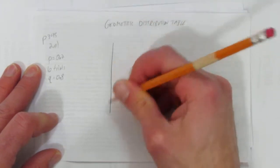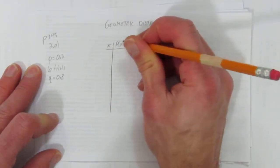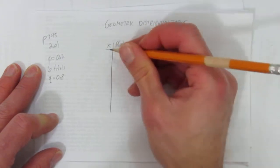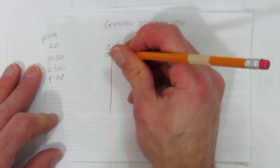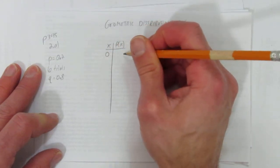So let's make our geometric distribution table. Well, with geometric, x is always the number of possible failures. So you could have 0 failures, then you'd have your success.